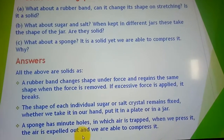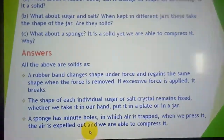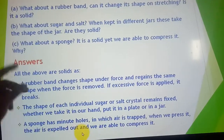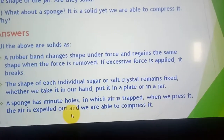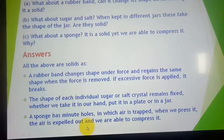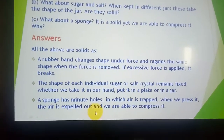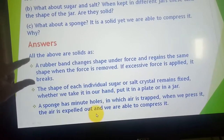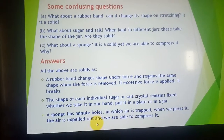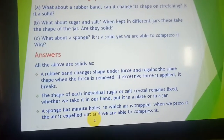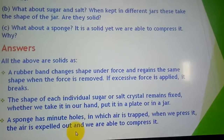What about a sponge — it is solid yet we can compress it. In all three examples — rubber band, sugar and salt, and sponge — the matter is in the solid state. A rubber band changes shape under force and regains its shape when the force is released. If excessive force is applied, it will break.